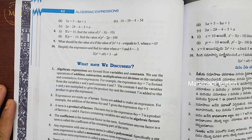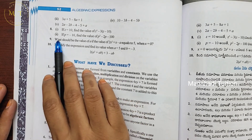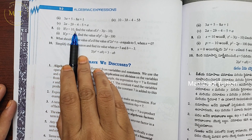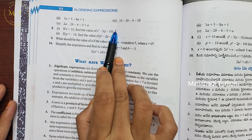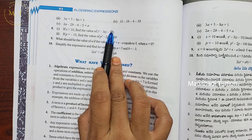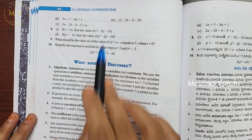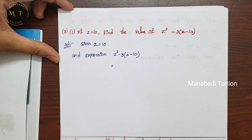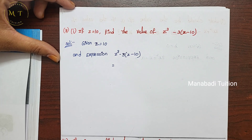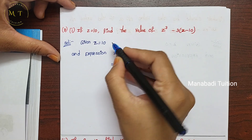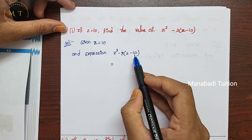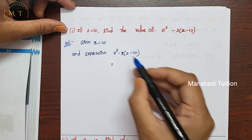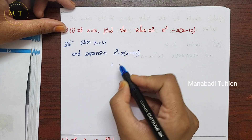Question number 8: if z is equal to 10, we will find out the total expression value. Solution — given z is equal to 10, so z value is 10. The expression is z cube minus 3z minus 10. You can substitute directly the z value 10.